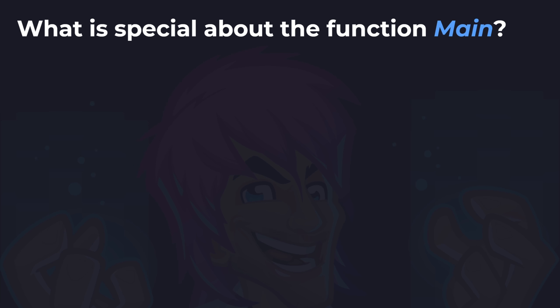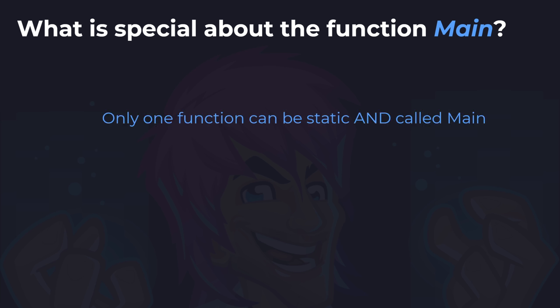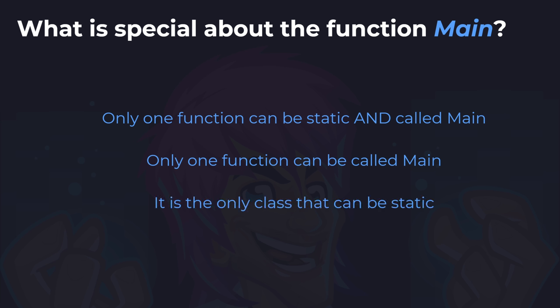I've saved the hardest question until last, and only those of you that were paying close attention will get this one. The answer wasn't directly given by me, but if you were paying attention to all the pieces of information given you should get this one. The question is: what is special about the function called main? Is it the only function that can be static and called main, or only one function can be called main and it is the only class that can be static? The answer is: only one function can be static and called main.